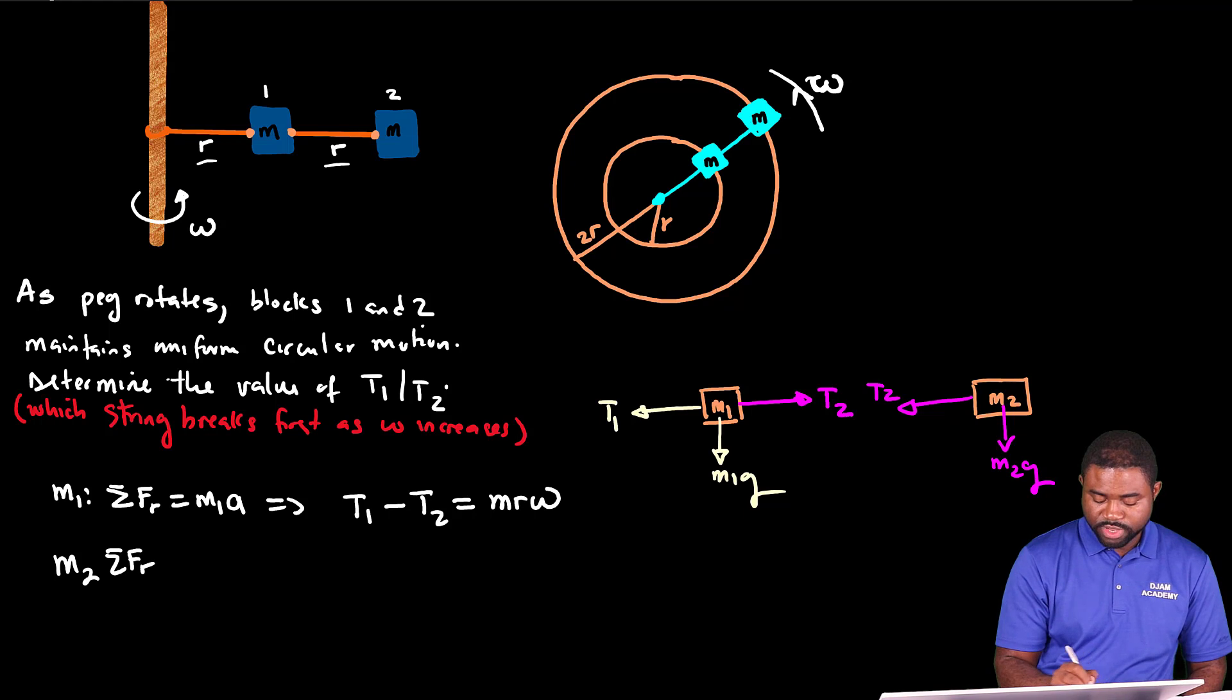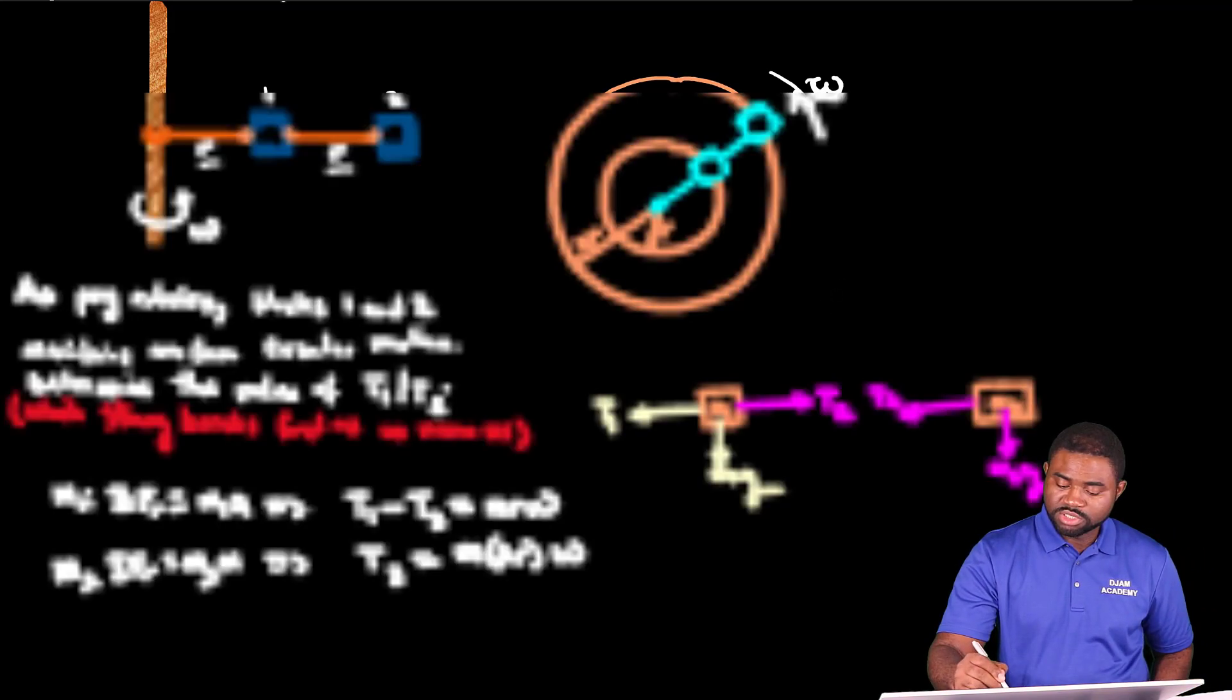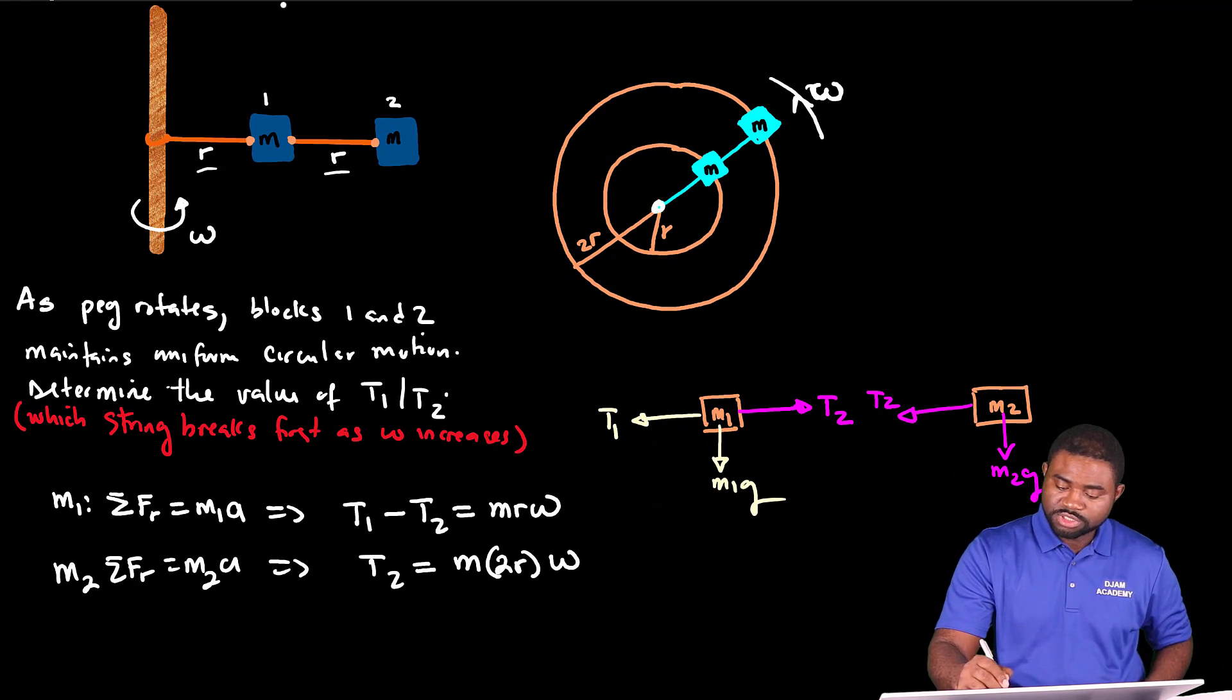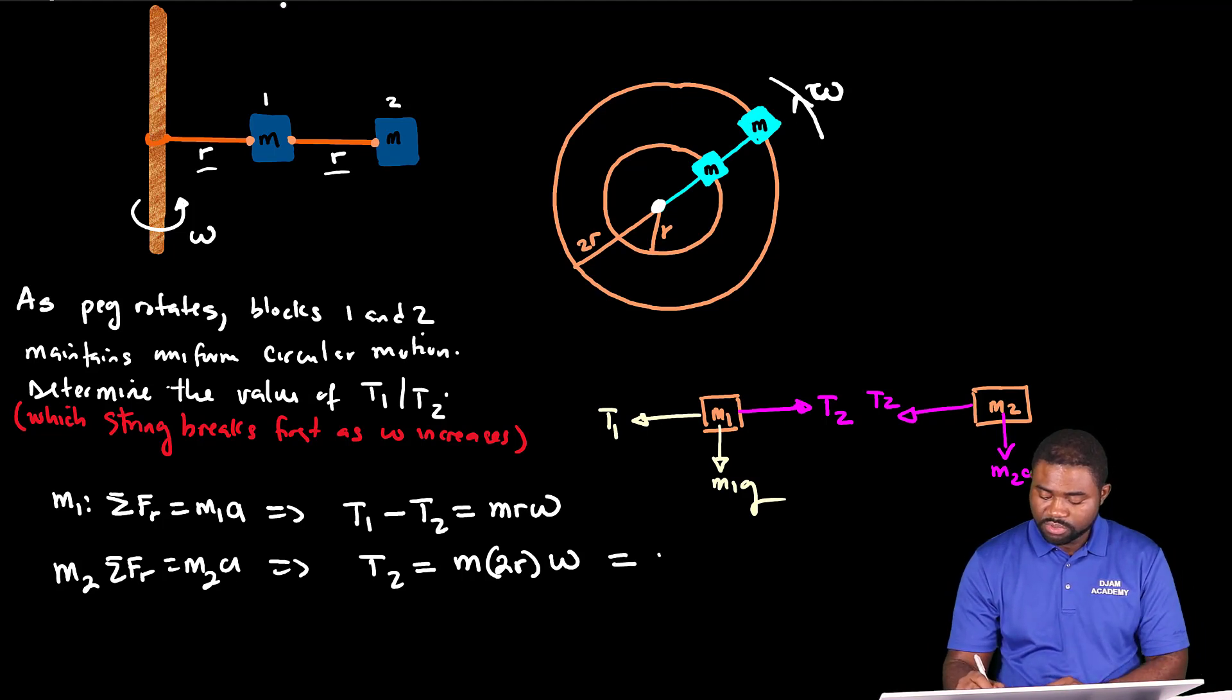Now for block two, the summation of FR is equal to M2A, which implies that T2 is equal to M times 2R omega squared. Remember that the distance from the center of the circle to block two is actually literally 2R.